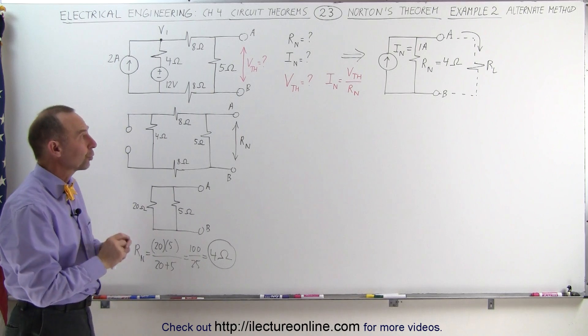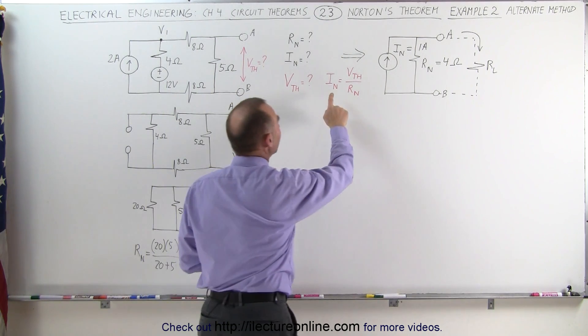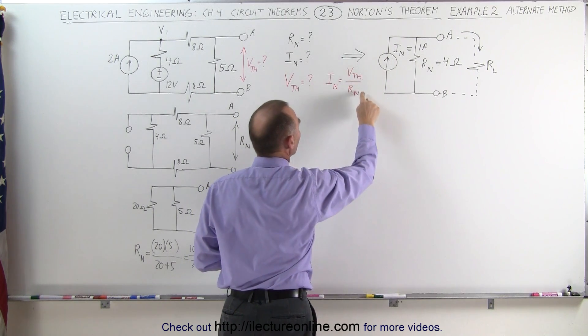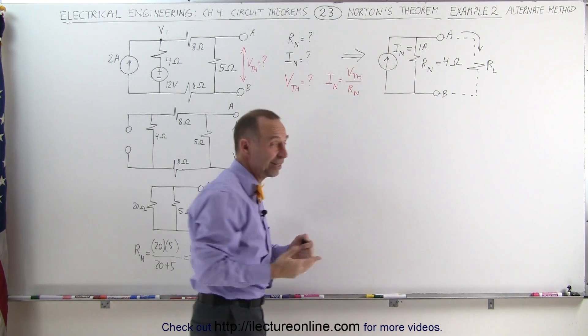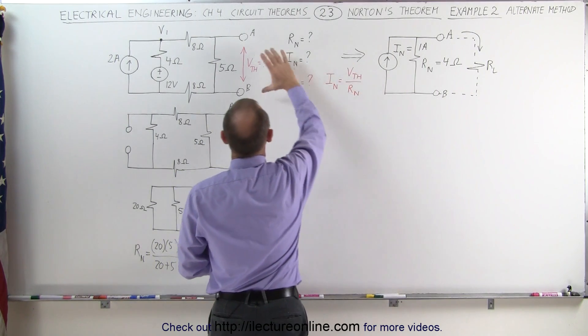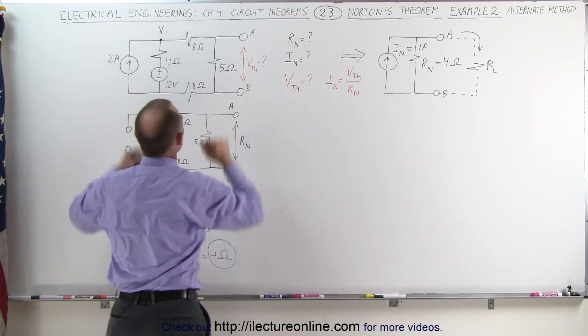Now we're going to find the Norton current, but instead of doing it the way we did last time, we're going to say that the Norton current is equal to the Thevenin voltage divided by the Norton resistance, which by the way is equal to the Thevenin resistance. So we need to find the Thevenin voltage, which is the voltage across terminals A and B with the original circuit like that.